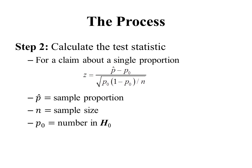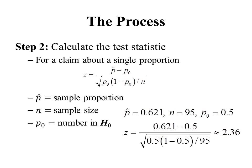In Section 5.2 we'll talk more about where this formula comes from and what it means, so for right now we'll just take it for granted. In this particular example, p-hat is 0.621 (our sample proportion from the data), n is our sample size of 95, and p-naught is 0.5, the number used in the null hypothesis. Plugging the numbers into the formula and doing the arithmetic, we get a test statistic of 2.36.